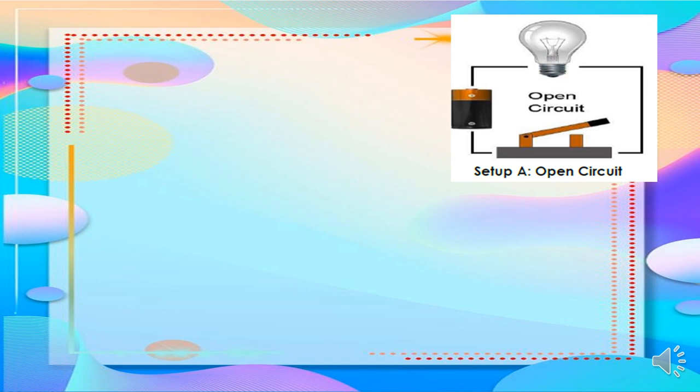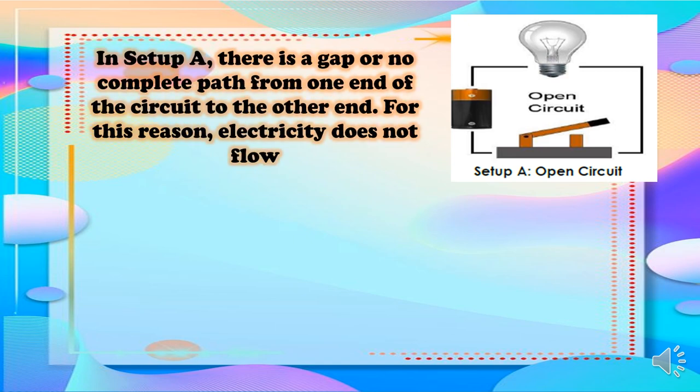This is setup A, which is an open circuit. In setup A, there is a gap or no complete path from one end of the circuit to the other end. For this reason, electricity does not flow.